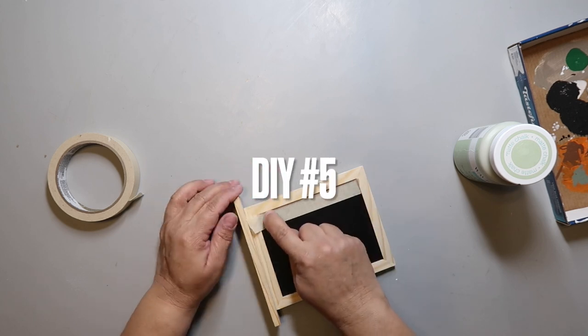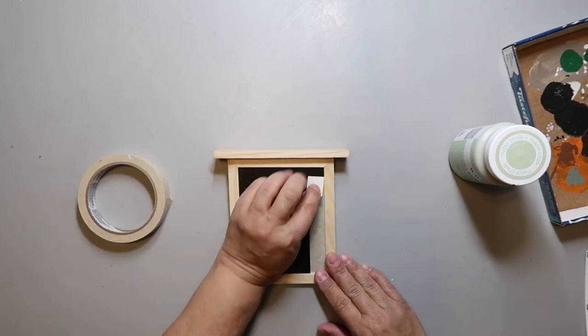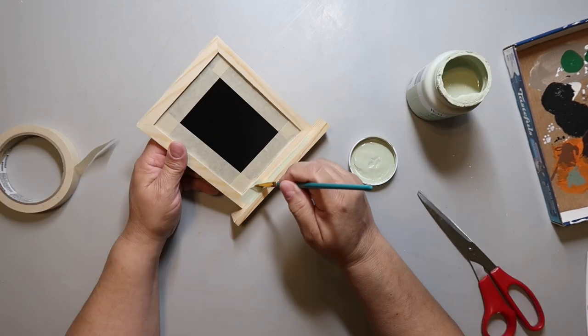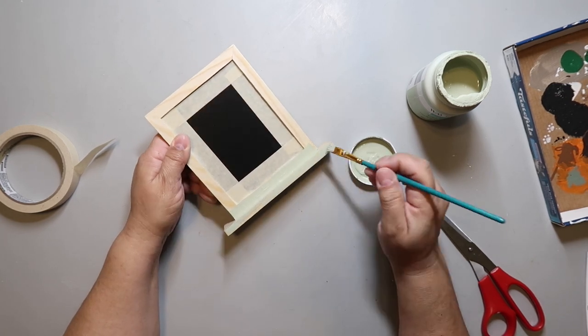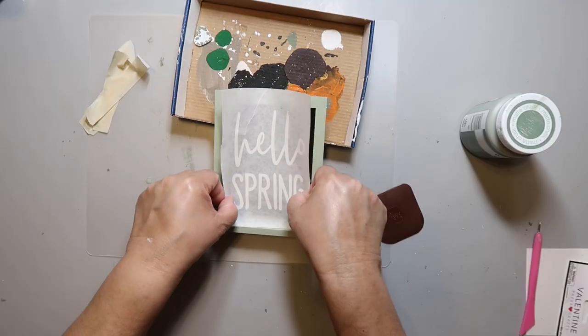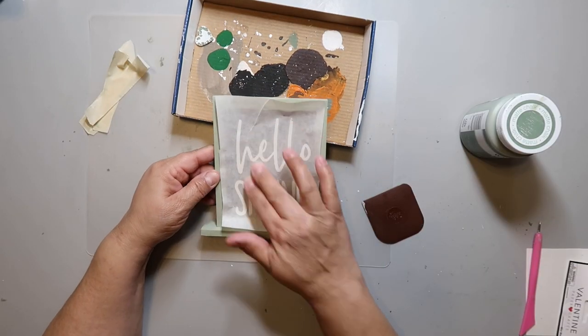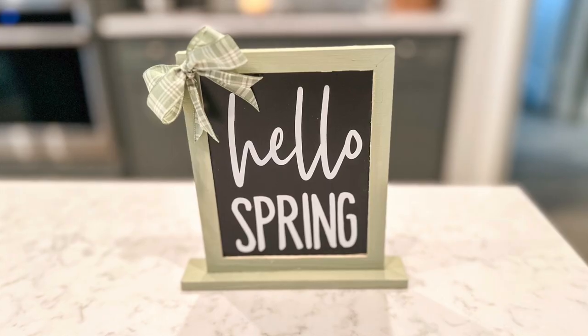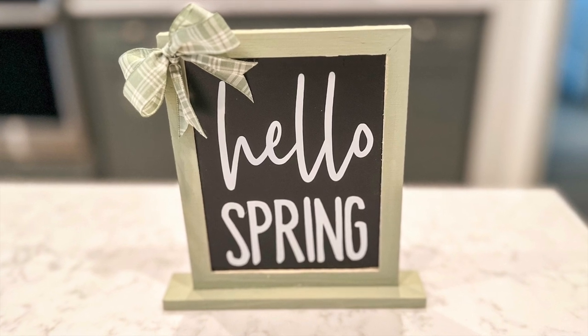DIY number five is going to be a cute and simple sign. I taped off the chalkboard side of this sign and painted it green. This is the celery color and I've also been using moss as well and they're both by Waverly. I cut out this decal out of vinyl using my Cricut and I placed it on the chalkboard side of the sign. I added a little finger bow to the corner and that is it y'all. Super simple and easy to make and it turned out super cute.